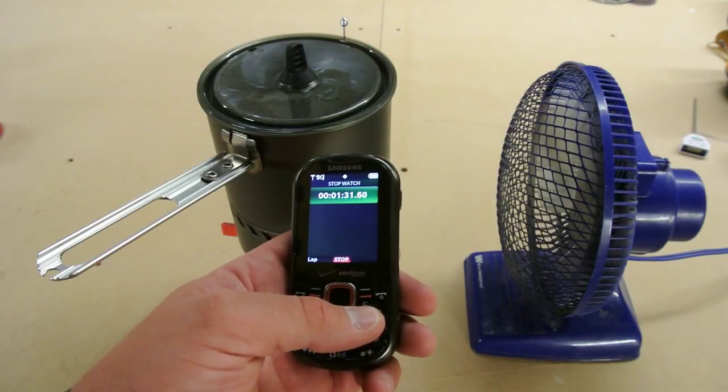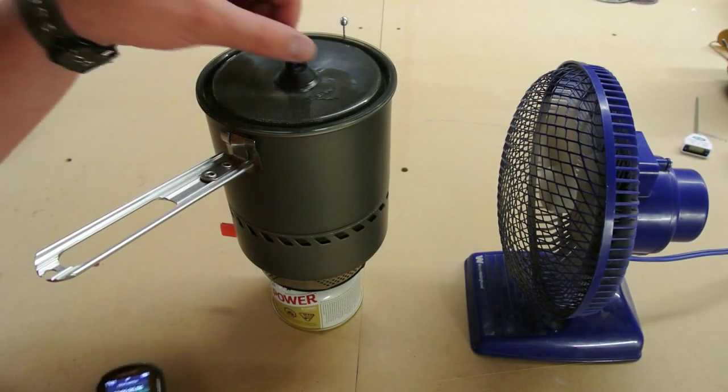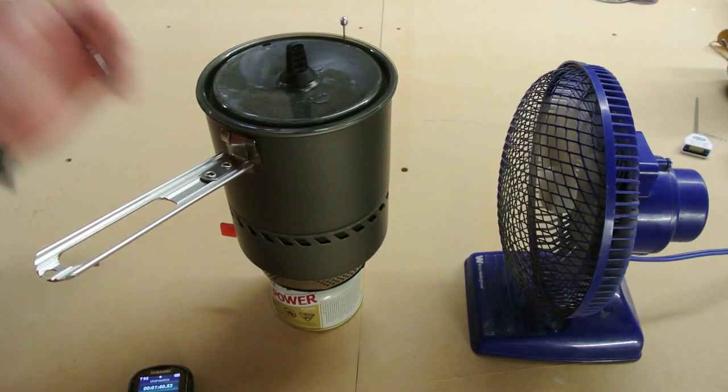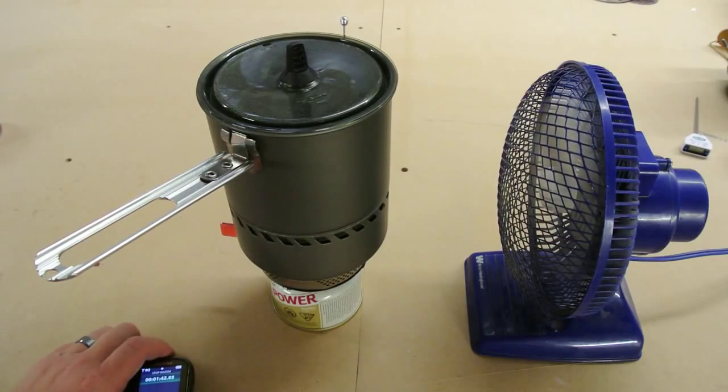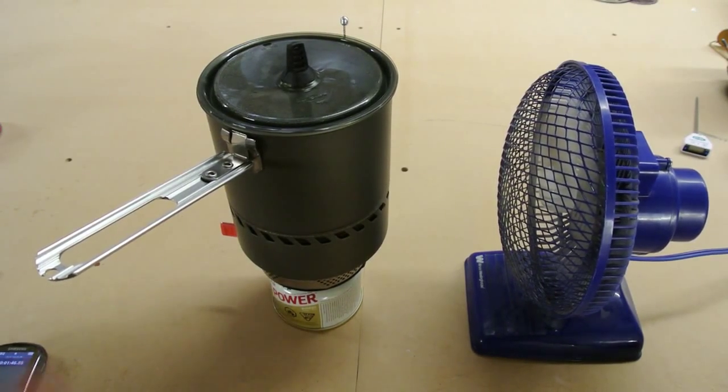All right, we are approaching one and a half minutes here. One minute, 33 seconds or so. Pot's doing quite well. There's still a 3.7 mile an hour breeze on the pot. See how this thing keeps going.